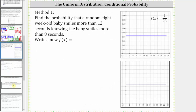Now going to our problem, we will find the probability two ways. In the first method, we will find a new probability density function. We're asked to find the probability that a random eight-week-old baby smiles more than 12 seconds, knowing that the baby smiles more than eight seconds.